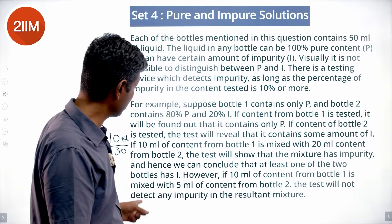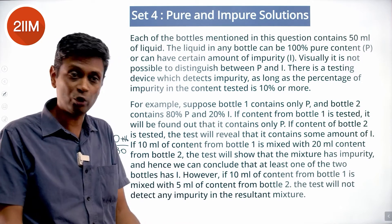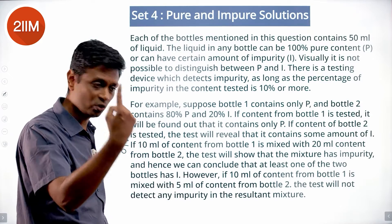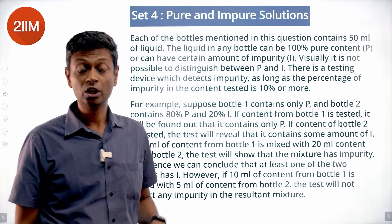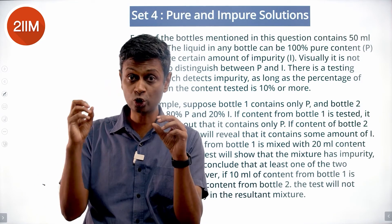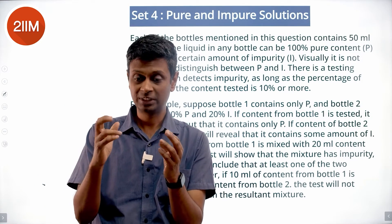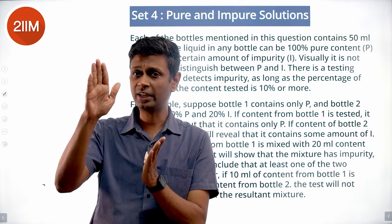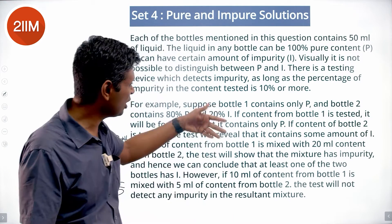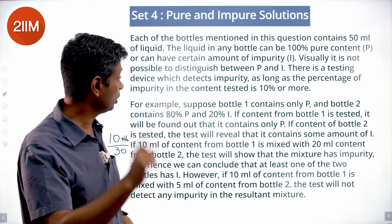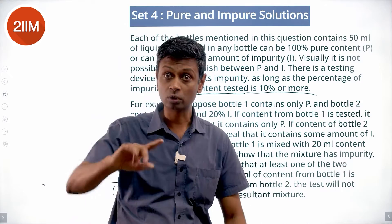However, if 10ml from bottle 1 is mixed with 5ml from bottle 2 — bottle 2 is 20% impure, so 5ml contributes 1ml of impurity — 1/15 is less than 10%, so impurity will not be detected. Mixing in ratio 2:1 impurity is detected; ratio 1:2 it won't be. The weighted average impurity: if it is 10% or more it will get detected, less than 10% it won't. If mixed in equal quantities it will be exactly 10%, which will get detected.